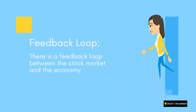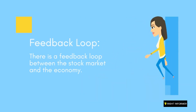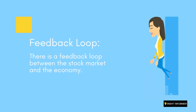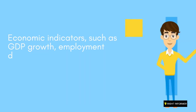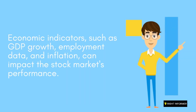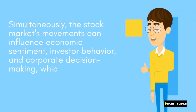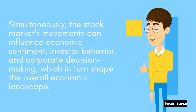There is a feedback loop between the stock market and the economy. Economic indicators, such as GDP growth, employment data, and inflation, can impact the stock market's performance. Simultaneously, the stock market's movements can influence economic sentiment, investor behavior, and corporate decision-making, which in turn shape the overall economic landscape.